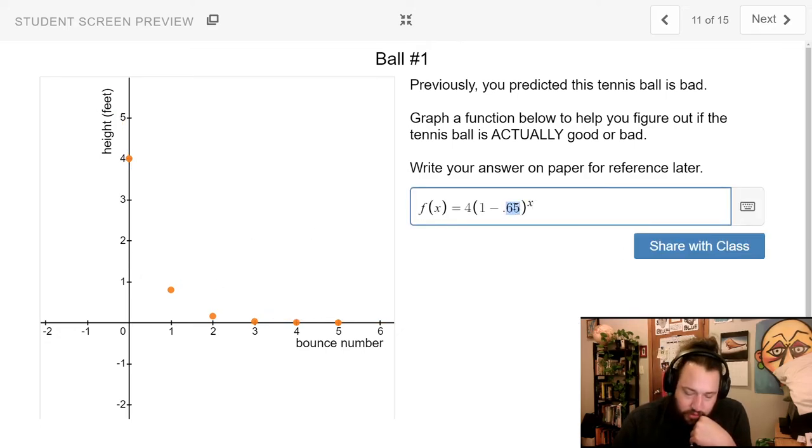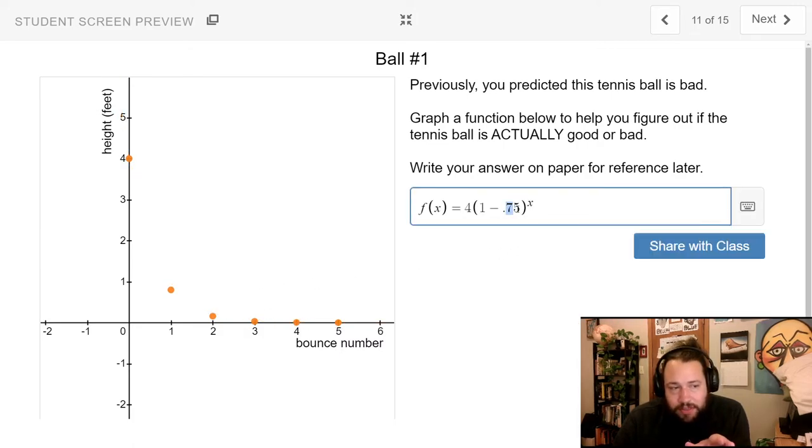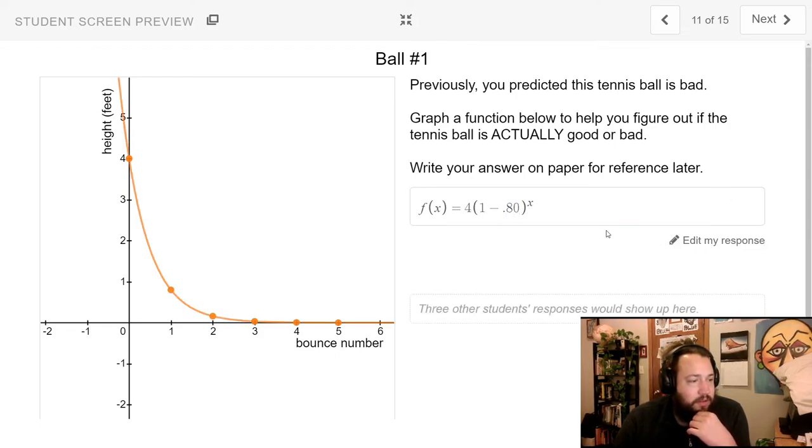We just keep going and guessing. So, let's go minus 75%. So, every bounce loses 75% of its bounce. Oh, this one's super duper close. Well, it even looks like it's close on bounce 4 and 5. So, if 75% loss, let's go with maybe 80% loss.